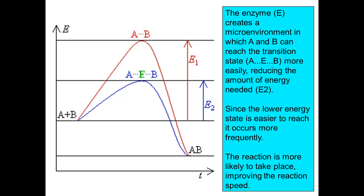The enzyme creates a microenvironment in which A and B can reach the transition state (AEB) more easily, reducing the amount of energy needed to form the complex. This is the energy required to change from A plus B into AB. If you can reduce that energy state to E2, then the lower energy state is easier to reach and occurs more frequently, which improves the speed of the reaction.